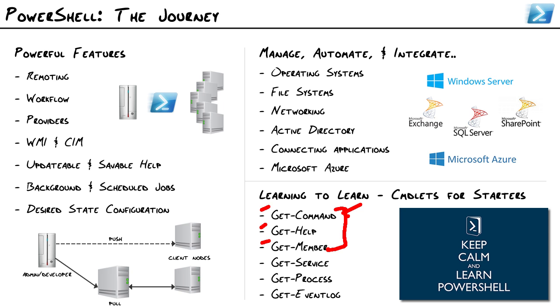Three more simple cmdlets every admin should know: Get-Service, Get-Process, and Get-EventLog — to get a handle on services, processes, and event logs. They're all very easy cmdlets to use.